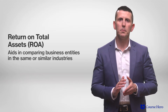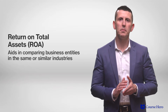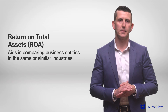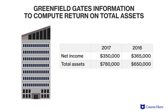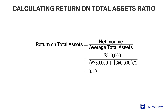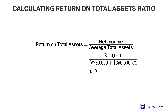The ROA ratio can be computed by dividing net income by the average total assets. For example, Greenfield Gates Company has net income of three hundred and fifty thousand dollars in 2017. Its total assets were six hundred and fifty thousand dollars in 2016 and seven hundred and eighty thousand dollars in 2017. The return on assets ratio will be three hundred and fifty thousand dollars divided by the average of six hundred and fifty thousand dollars and seven hundred and eighty thousand dollars.